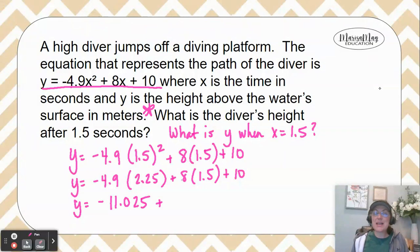So then you can do 8 times 1.5, which will give you 12 and then 10. Be sure and go ahead and add these three numbers, and you'll end up with 10.975.